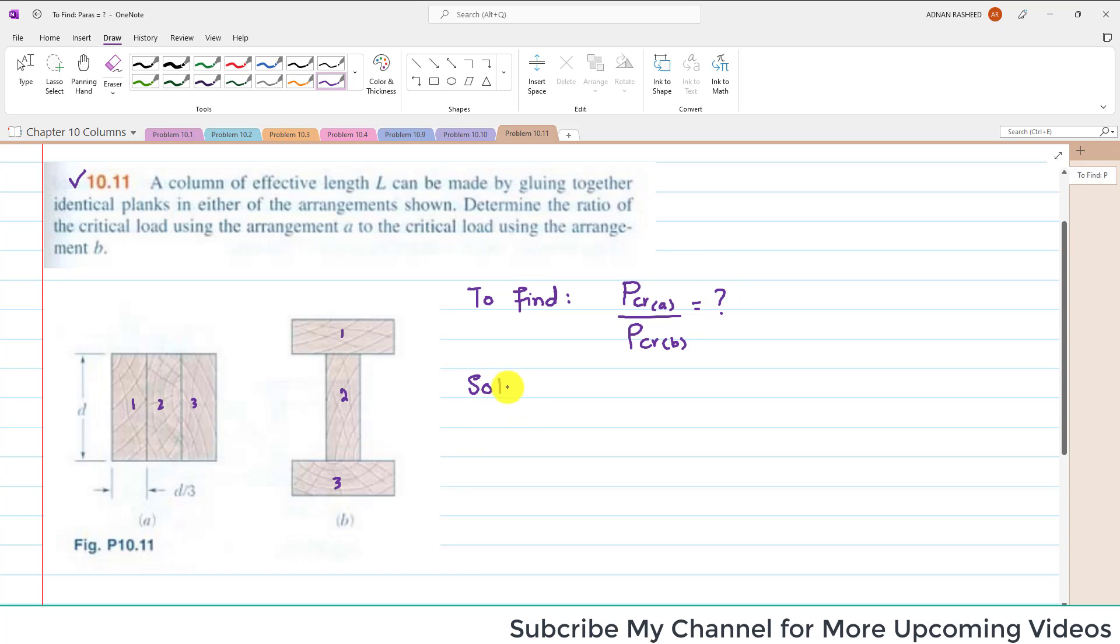Let's start with the solution. As we know, P_critical equals π²EI over L². L is the effective length, E is modulus of elasticity. Since the same planks have been used in both arrangements, E will be the same - only I will change.